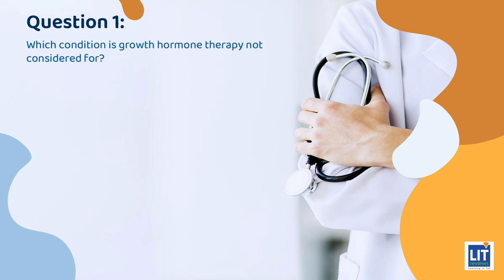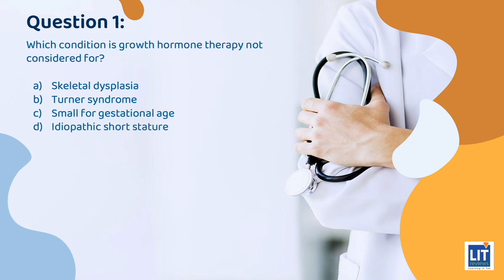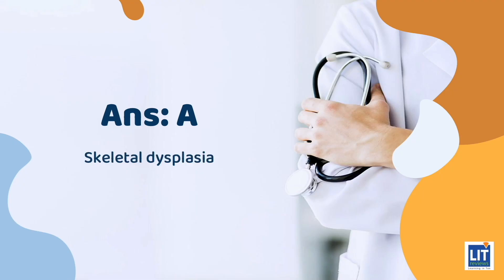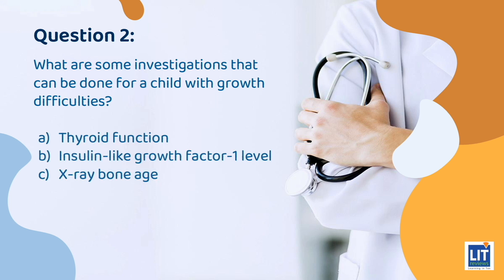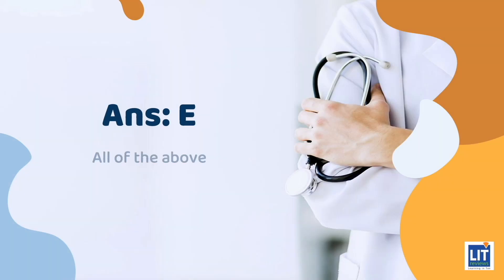Quiz time. Question 1: Which condition is growth hormone therapy not considered for? The answer is A: Skeletal dysplasia. Question 2: What are some investigations that can be done for a child with growth difficulties? The answer is E: All of the above.